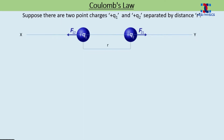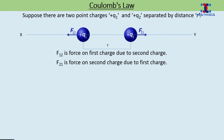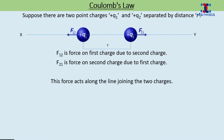We suppose there are two point charges, plus q1 and plus q2, separated by distance r as in the diagram. Since we have taken two like charges, there is a force of repulsion between them. The arrow head in the diagram represents the direction of force on each charge. The two charges repel each other along the line xy, so xy is the line of action of force. F12 is the force on the first charge due to the second charge, and F21 is the force on the second charge due to the first charge. The force acts along the line joining the two charges, that is line xy in the diagram.